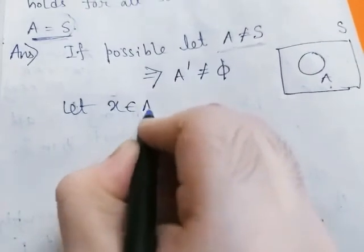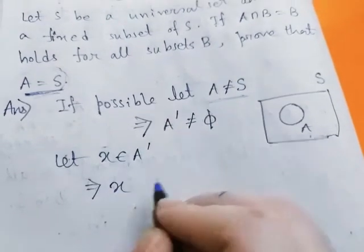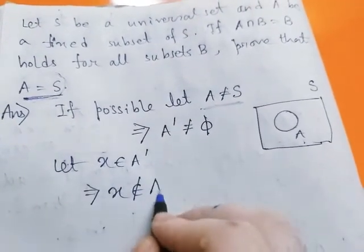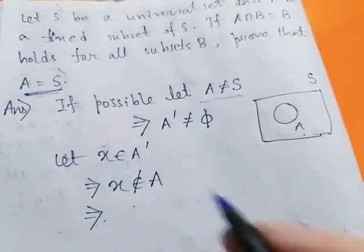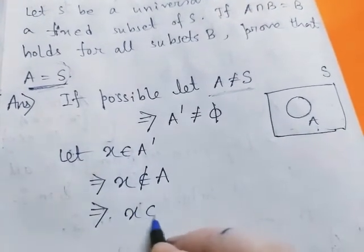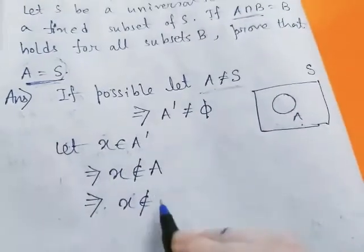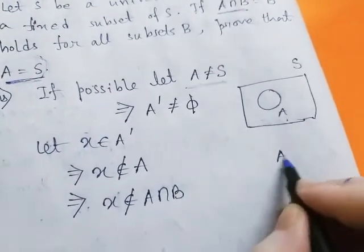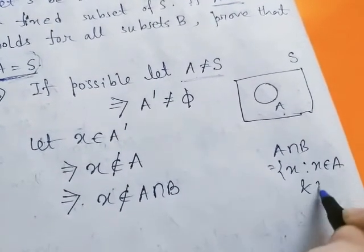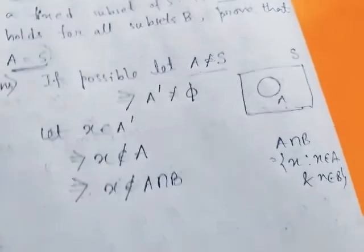Let x belong to A complement. This implies x does not belong to A. Now A intersection B contains those elements x such that x belongs to A and x belongs to B. Since x does not belong to A, obviously x does not belong to A intersection B.